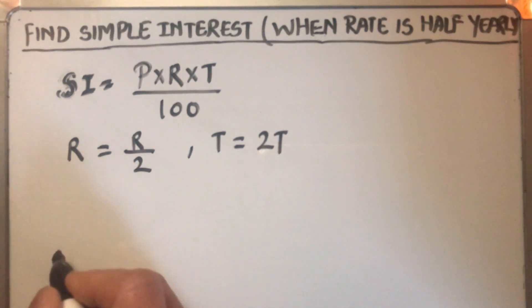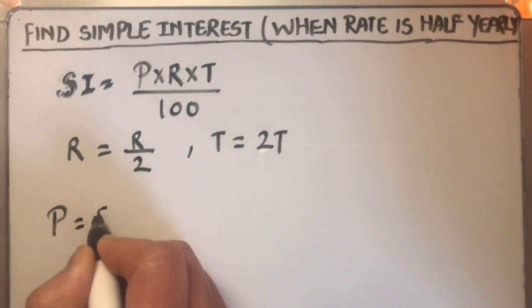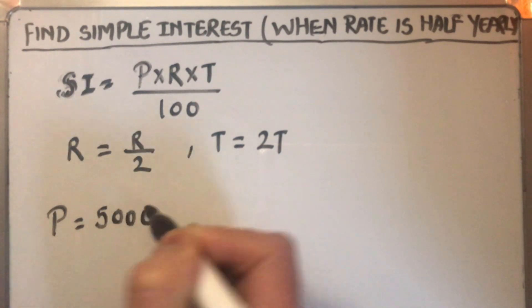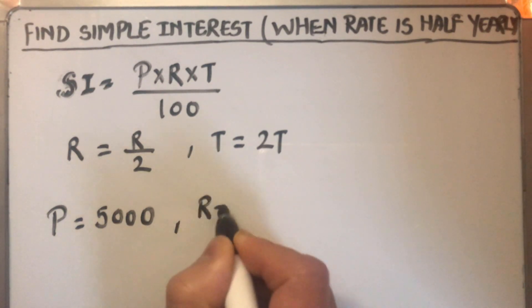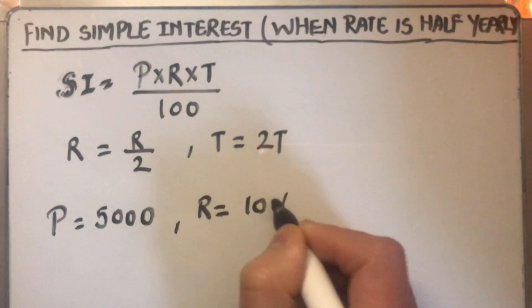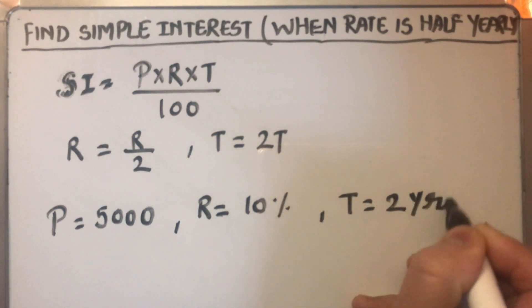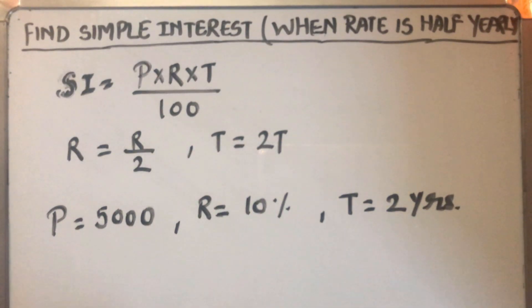So let's take an example. Suppose for an amount of 5000 rupees, the rate of interest is 10% and it is charged half yearly and time period is 2 years. How much you have to give the interest.